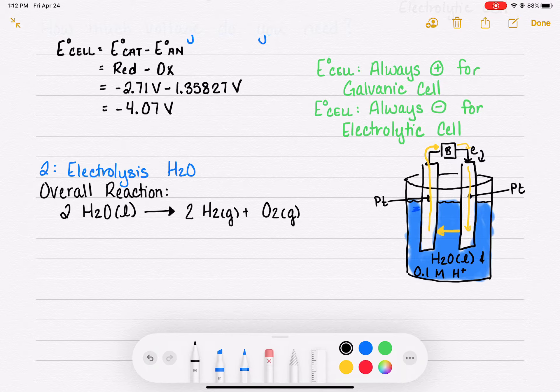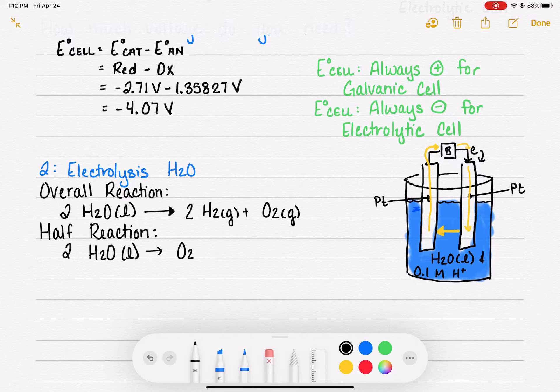The half reactions for this, we have two water molecules and they are producing the O2 molecule, and they also produce four H plus ions, those are going to be aqueous, and this is the oxidation reaction. So we're producing in this four electrons.